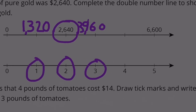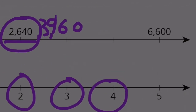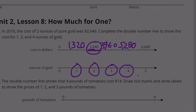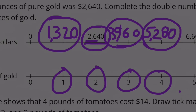Four ounces of gold would be $1,320 times four, or we could double $2,640. If I double $2,640: double 40 is 80, and double $2,600 is $5,200, so that gives $5,280 for four ounces. Summary: one ounce is $1,320, two ounces is $2,640, three ounces is $3,960, four ounces is $5,280.